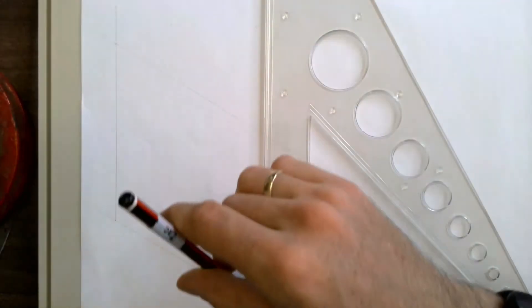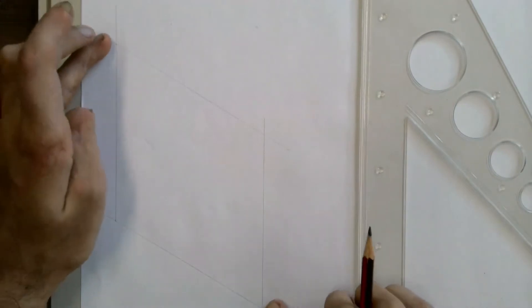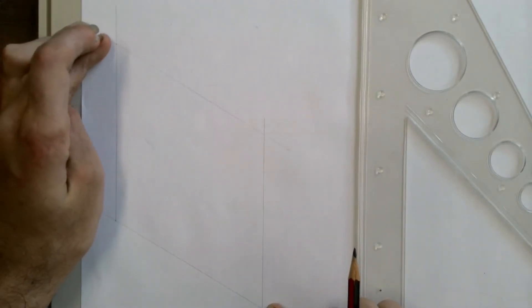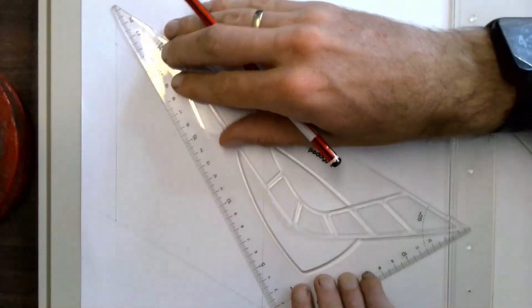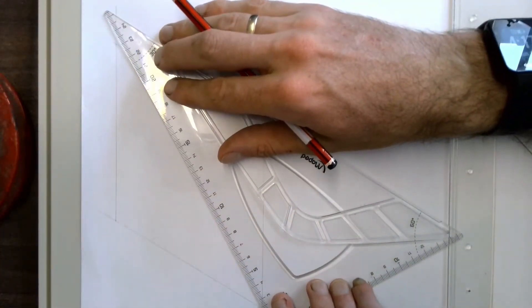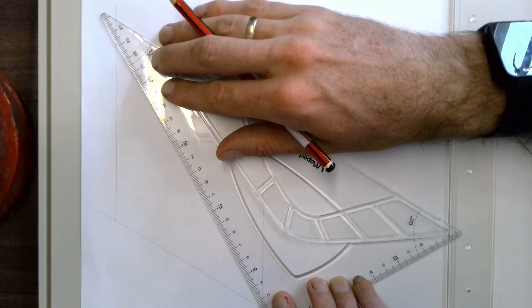Once you have completed the square, find the two acute corners and join them using another construction line. Once again, be as accurate as possible.